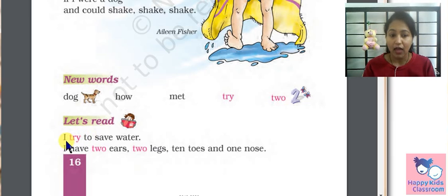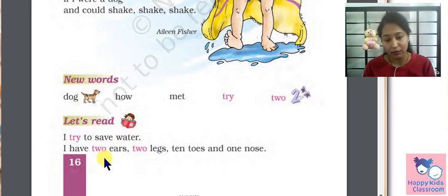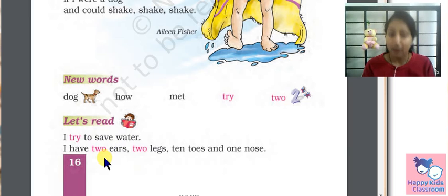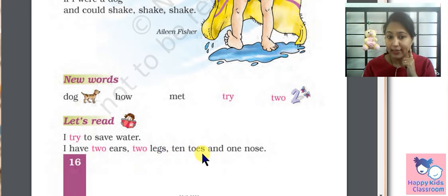So let us read these sentences. I try to save water. This is what we are saying. I try to save water. I have two ears, two legs, ten toes and one nose.